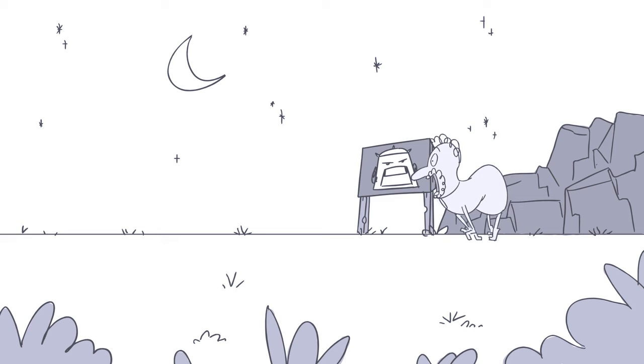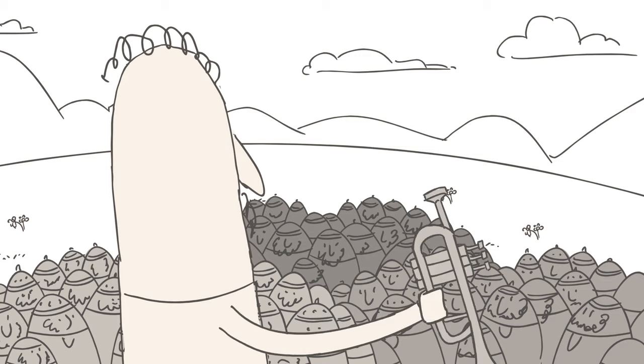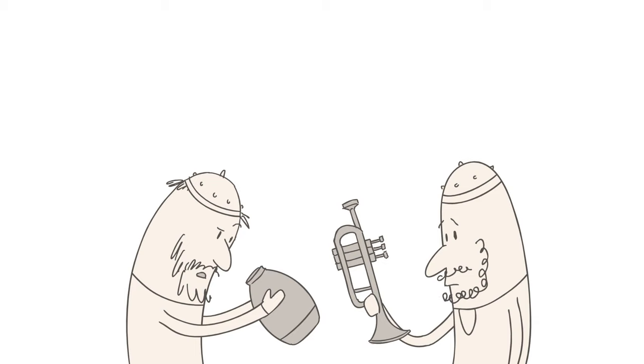He divided his men into three groups and gave them each a trumpet and a jar with a torch inside. Not usually what you bring to a fight, but God had a plan.